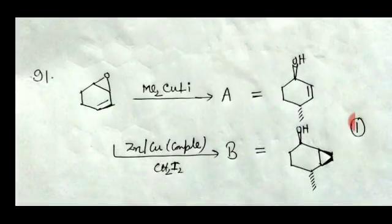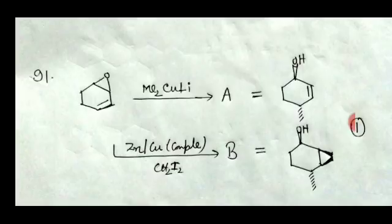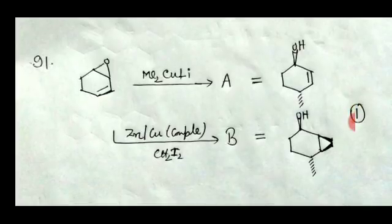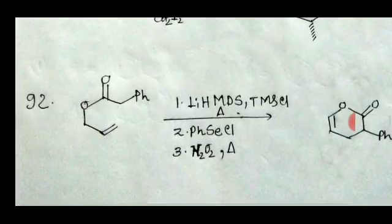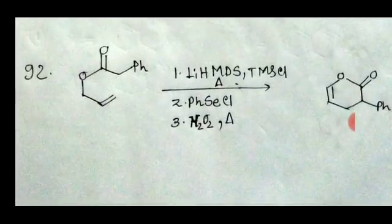For question number 91, the conjugated epoxide is in conjugation with the double bond, so it undergoes a 1,4-addition type reaction giving product A, where the methyl group approaches from the rear face of the epoxide to avoid steric clash. In the next step, the Simmons-Smith reaction occurs from the same side as the OH group — above the plane. Option 1 is the correct answer.